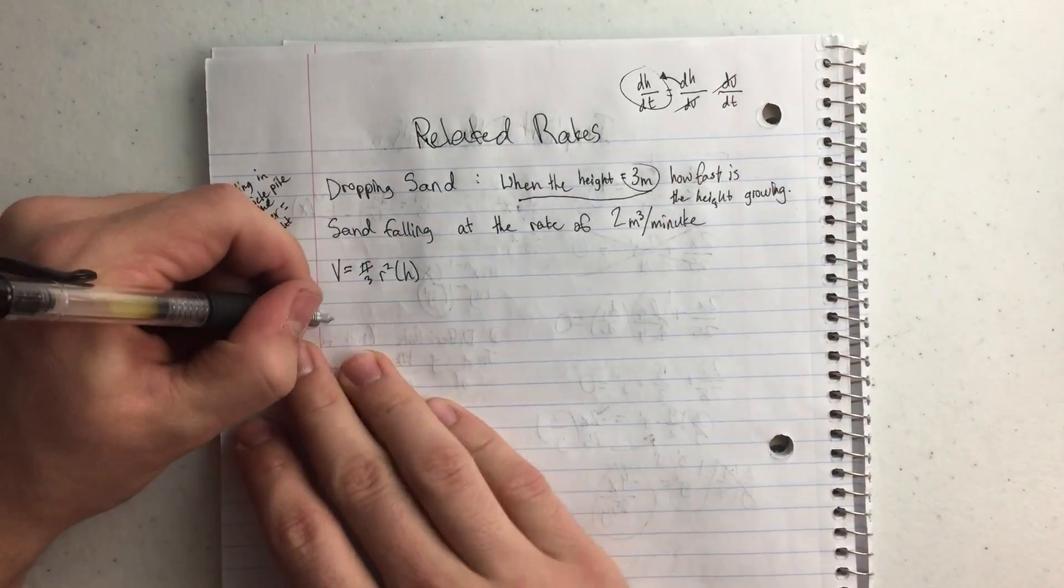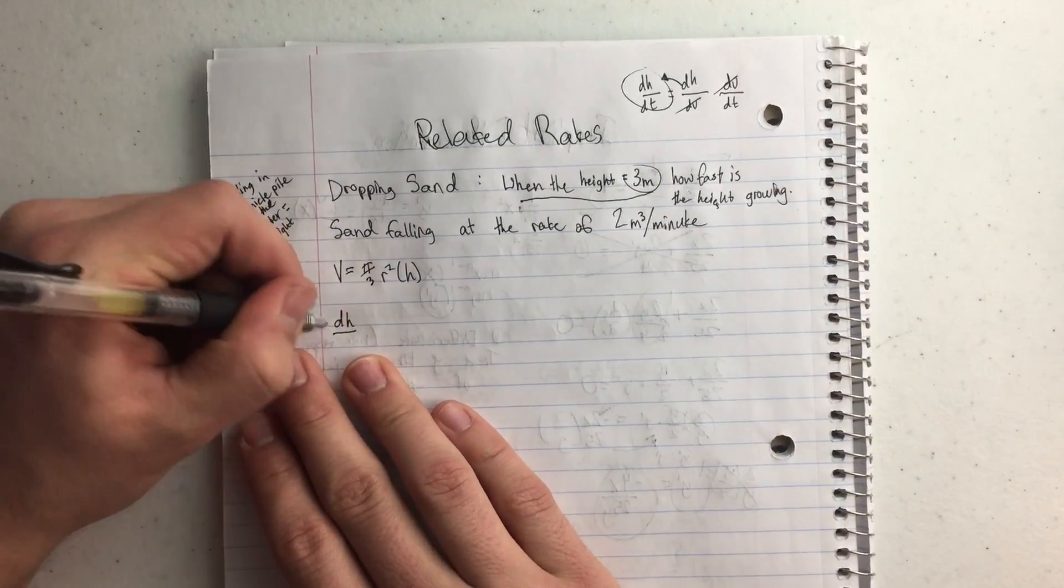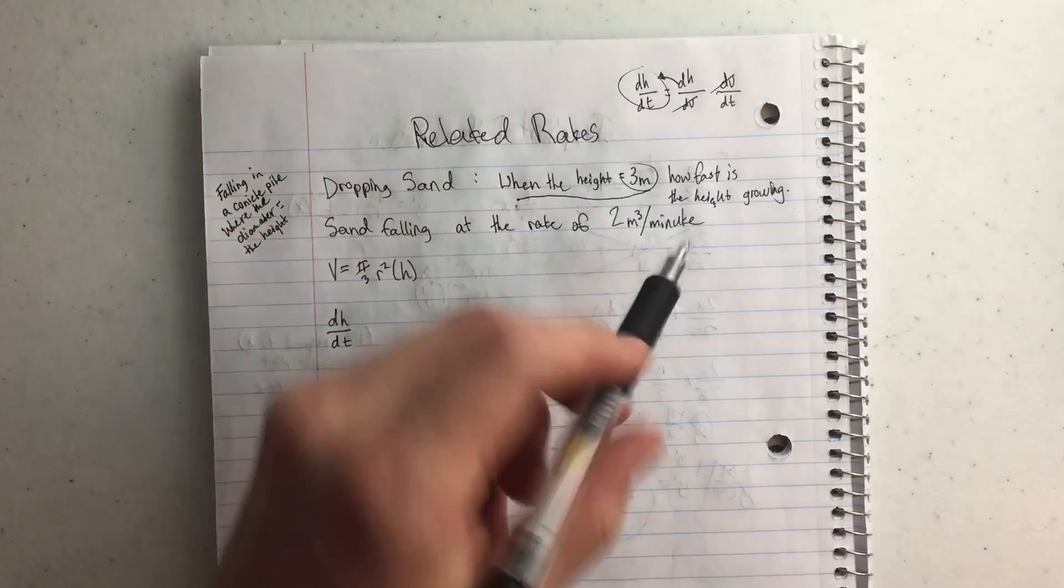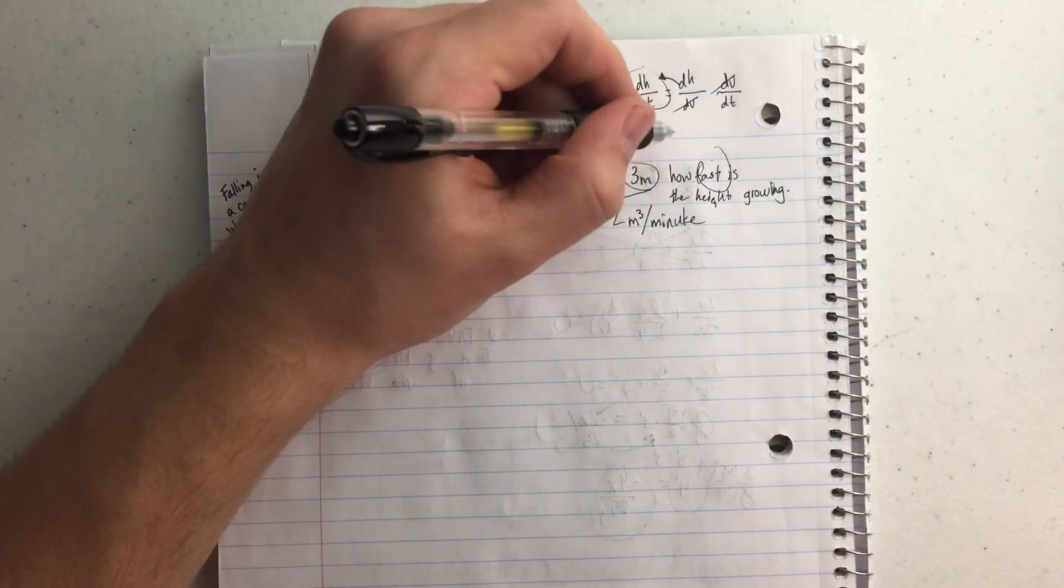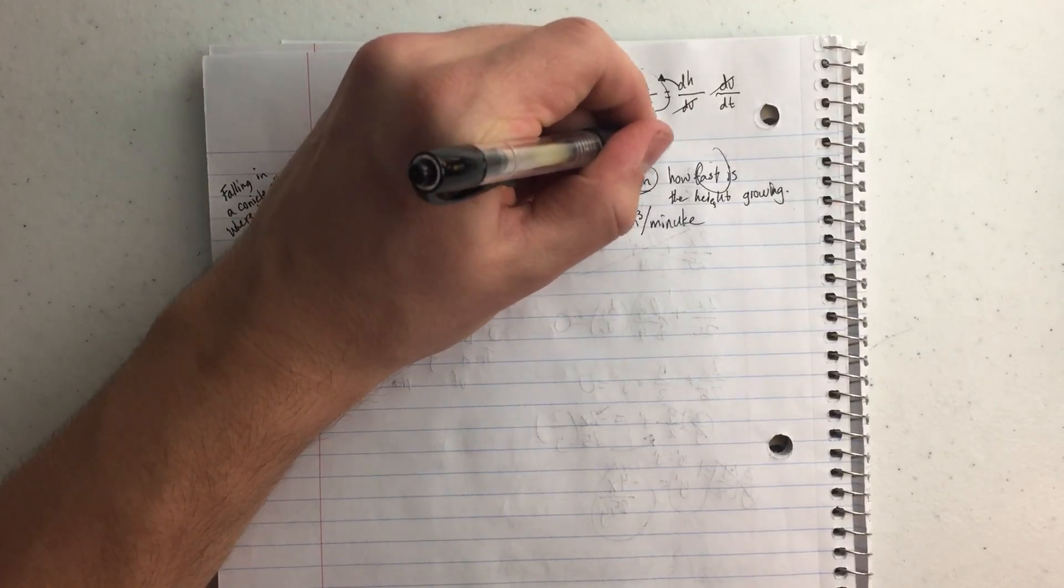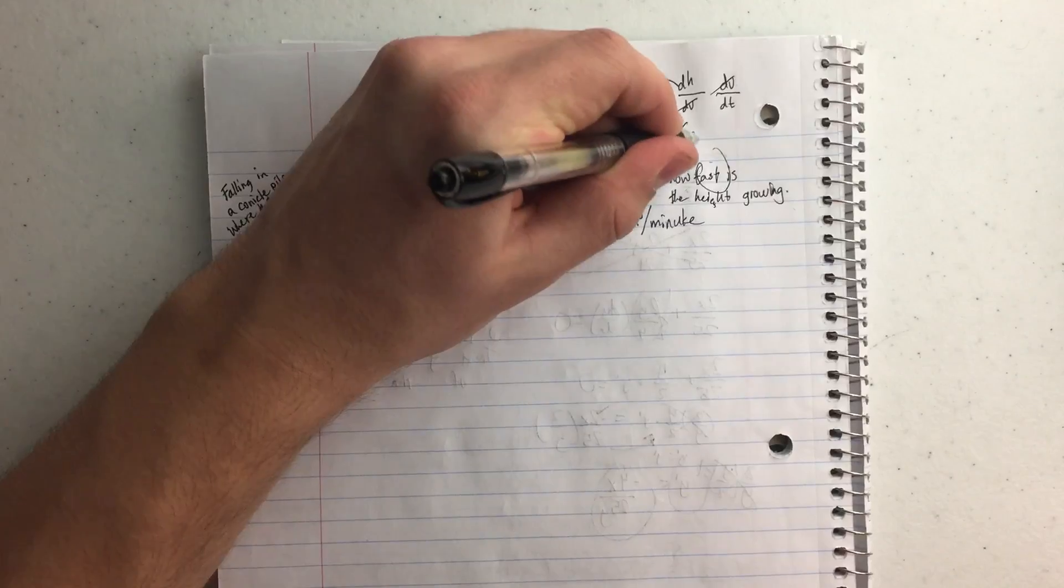So I need the change in the height over the time because they want a rate. How fast? Fast would be a rate, so something like meters cubed per minute or something like that.